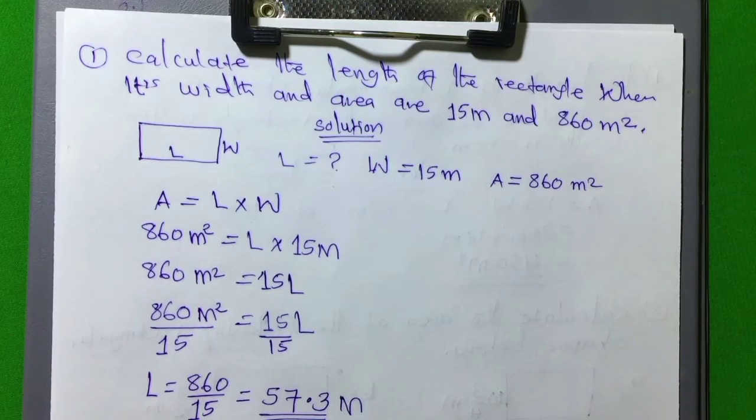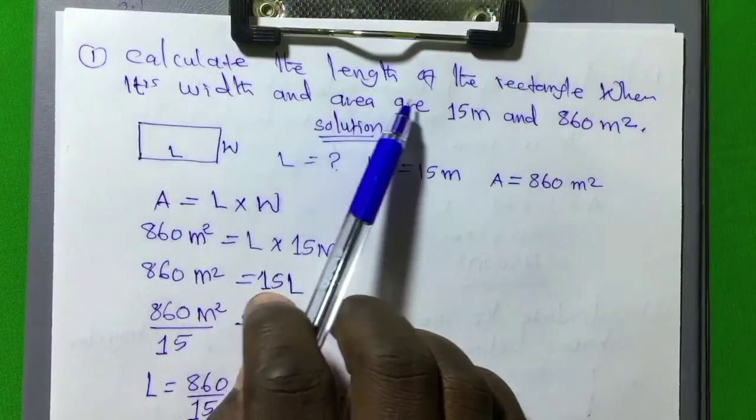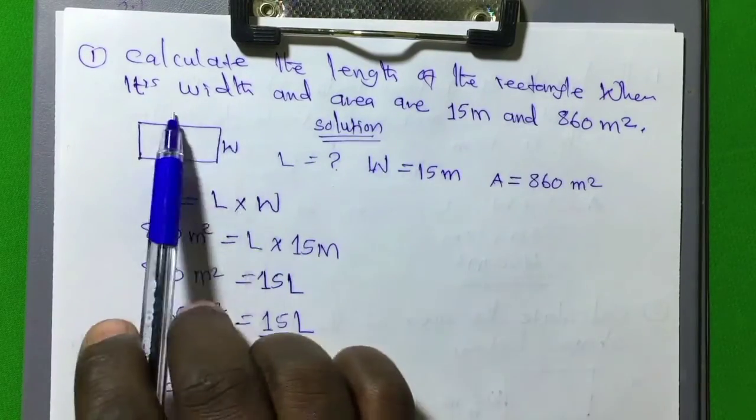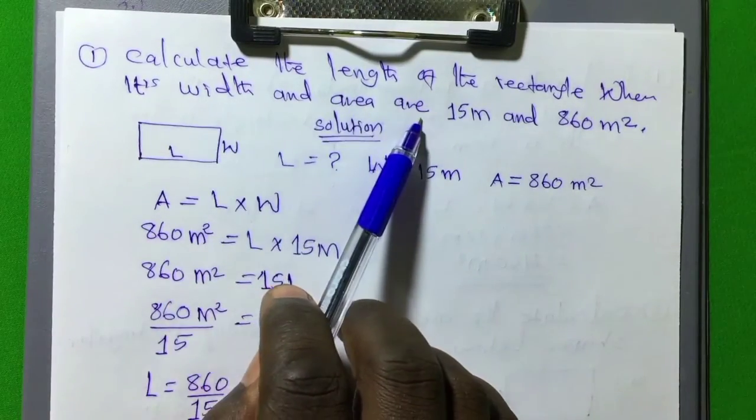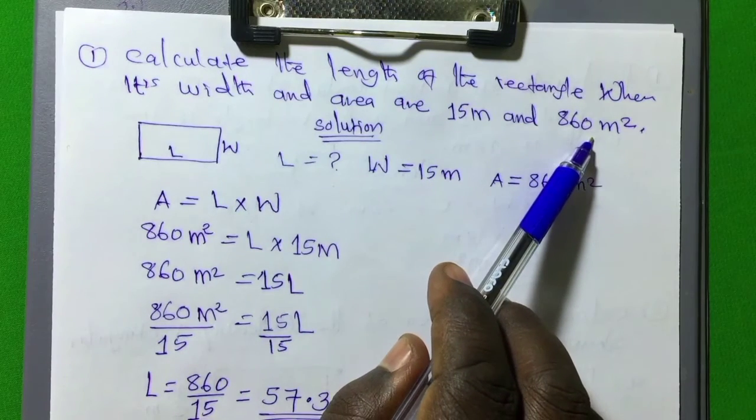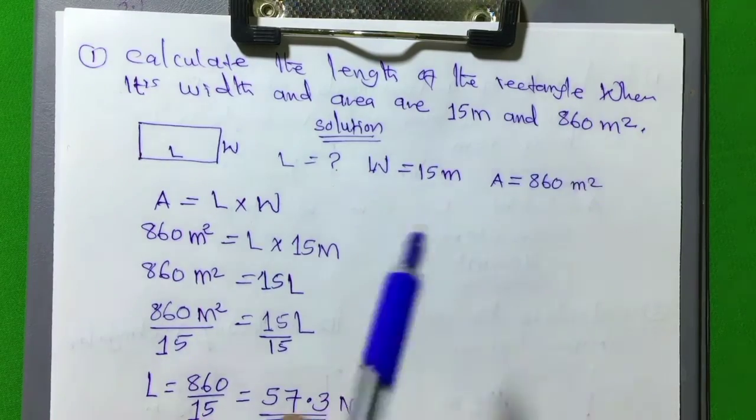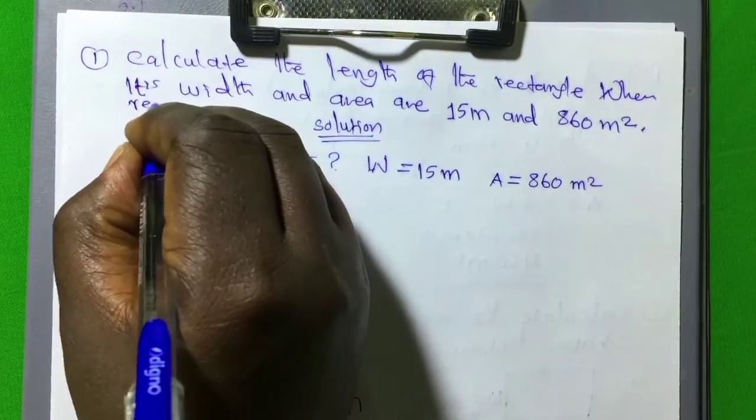So let me start with this first question. The first question here now it says, calculate the length of a rectangle when its width and area are 15 meter and 860 meter square respectively.